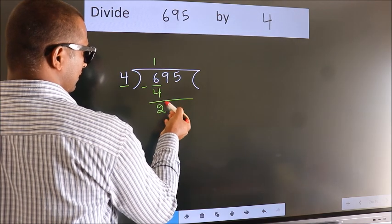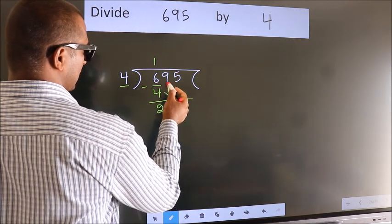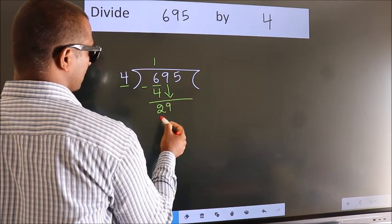After this, bring down the next number. 9 down, so 29.